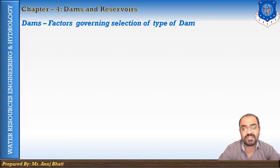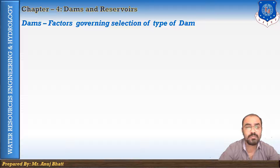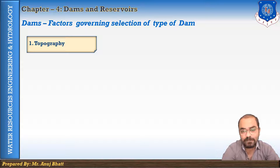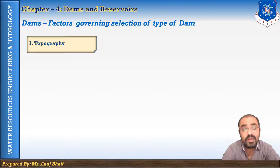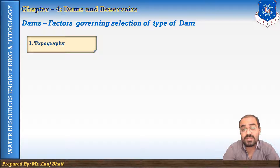Whenever you are selecting a particular type of dam, there are various things to keep in mind. The first factor is topography. The first choice for the type of dam is usually governed by the topography of the site. A low rolling plains country suggests an earthen dam with a separate spillway, while a low narrow V-shaped valley suggests an arch dam. A narrow stream flowing between high rocky banks suggests a concrete overflow gravity dam.